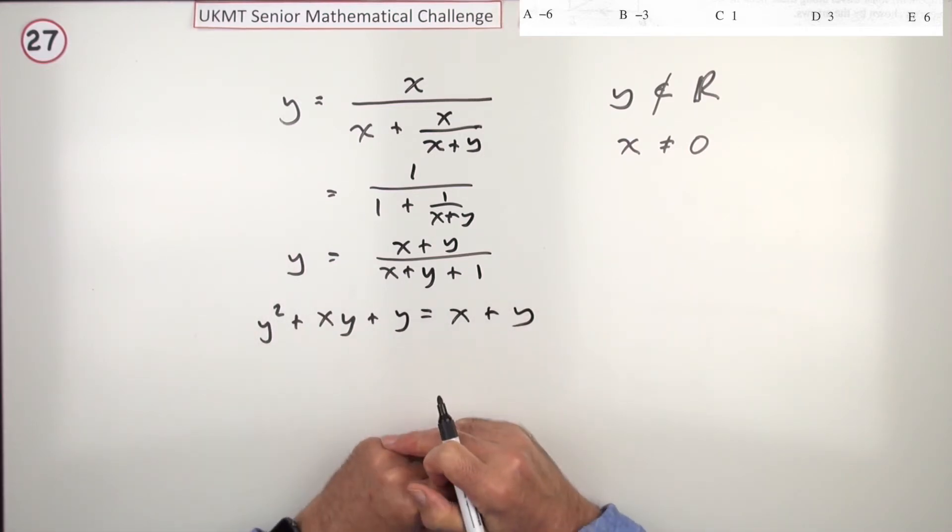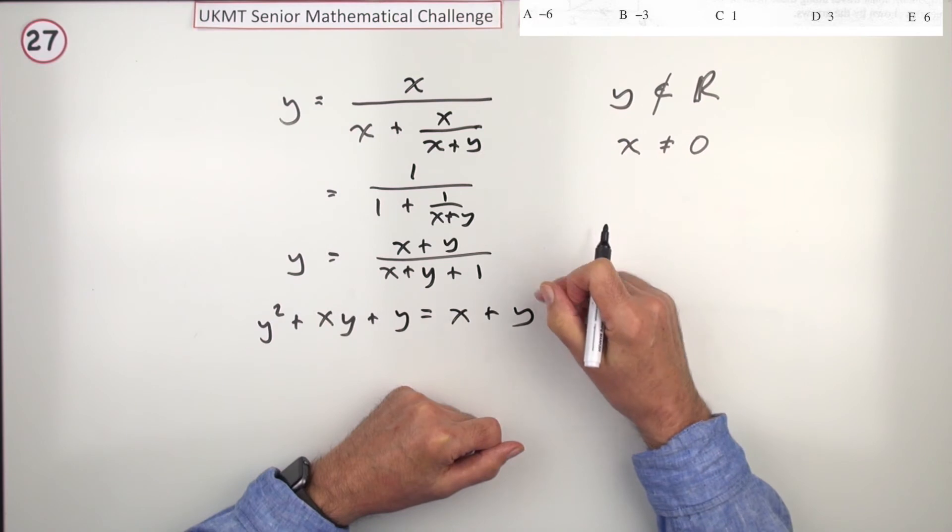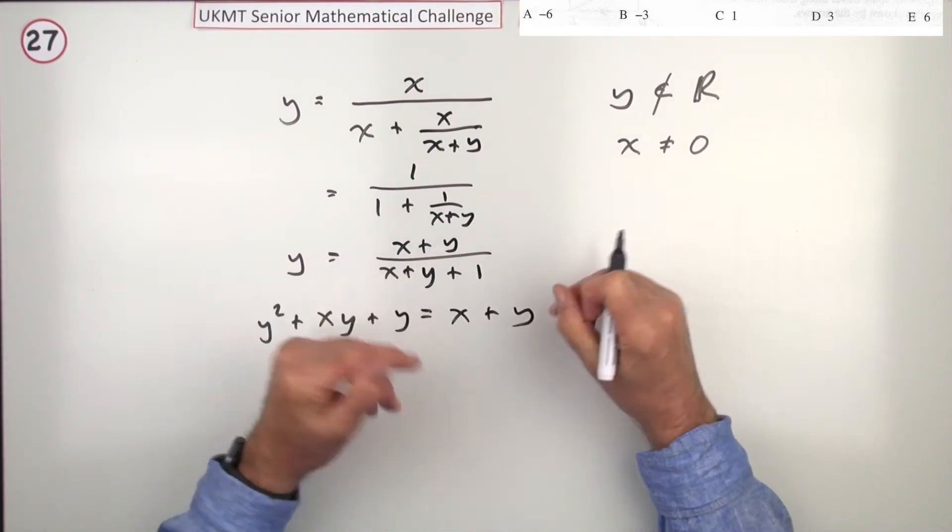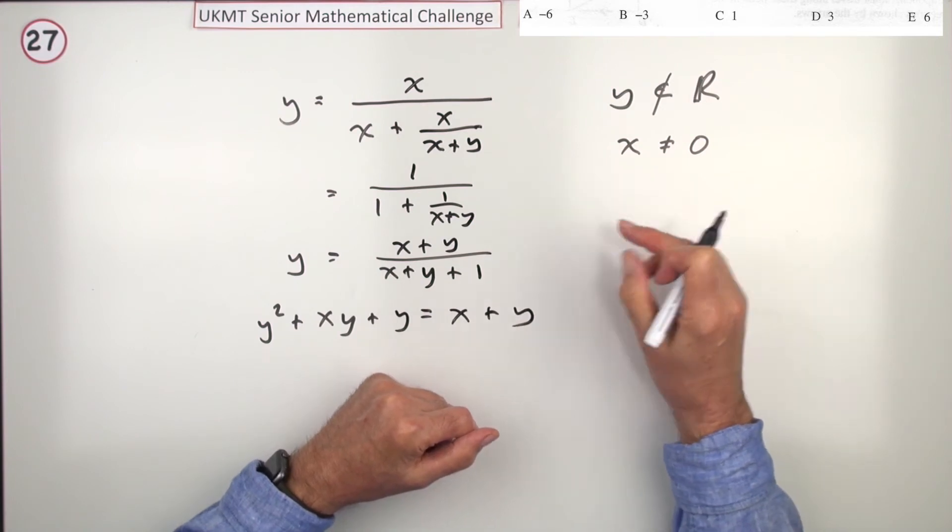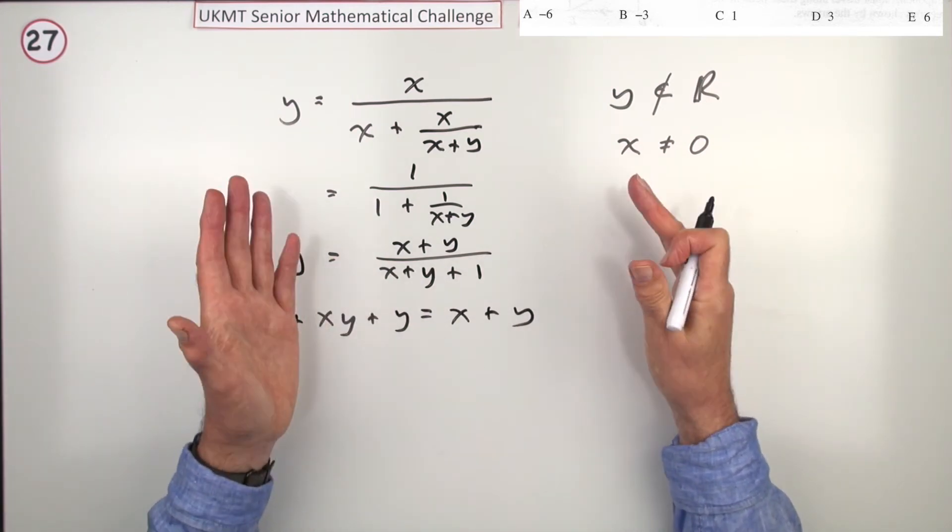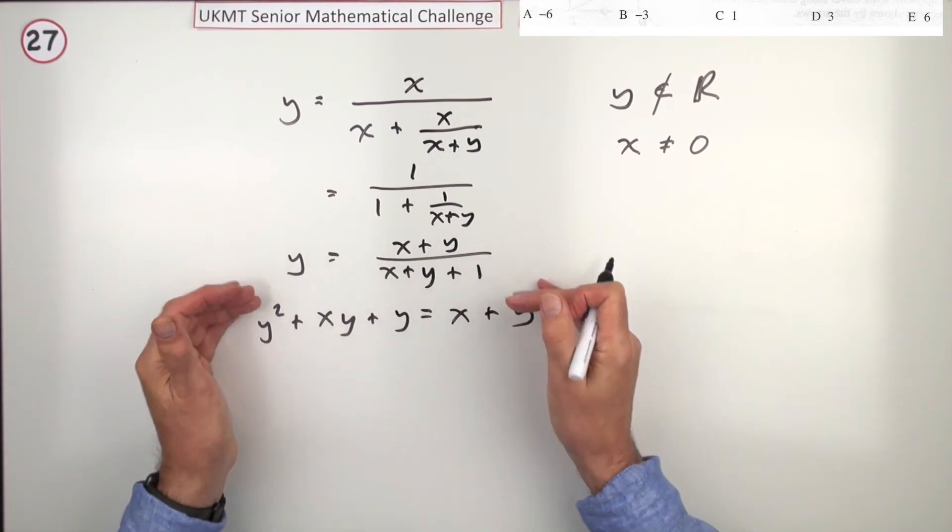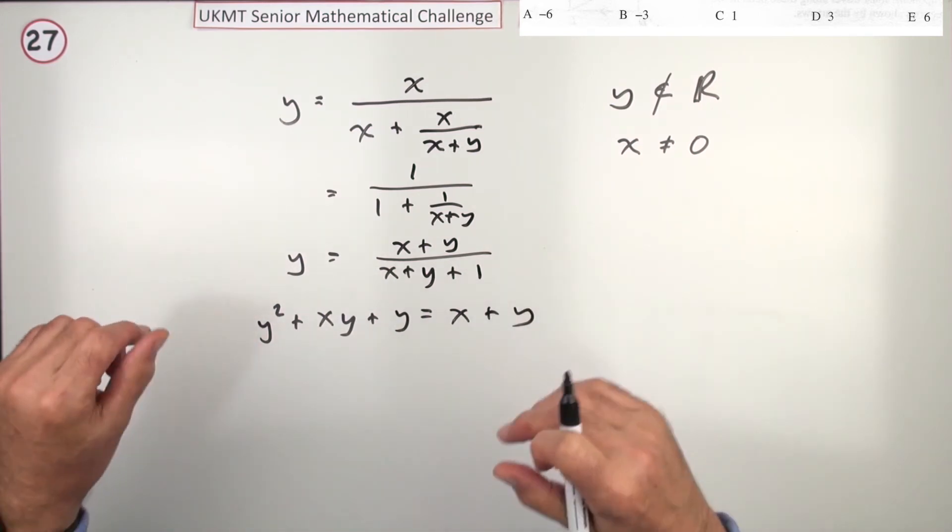because when it says you're not going to get any real answers, then you think of things like, well, will I have the square root of something that's negative? Will I be divided by something that's 0? Or, if you've got quadratic, you'll be saying, will the discriminant be less than 0? So, I'll get the quadratic first.